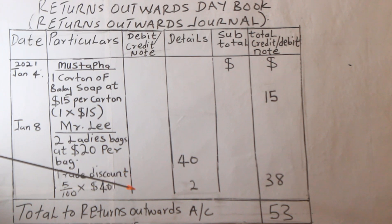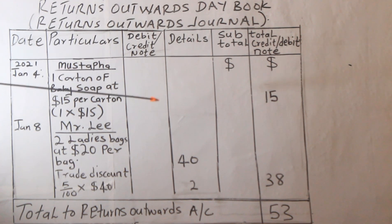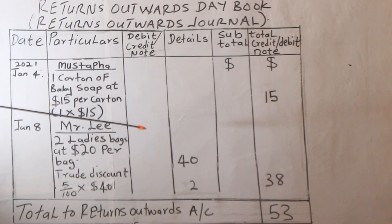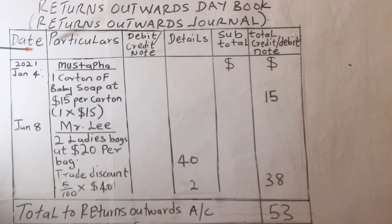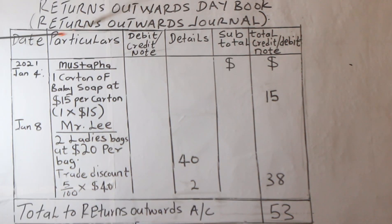As we progress, you will understand more about the treatment of the Return Outwards Day Book and the Purchases Journal. For our foundation stage, this is sufficient. Let us make a brief explanation of the headings, what they represent, and then move over to posting these transactions to the various ledgers.